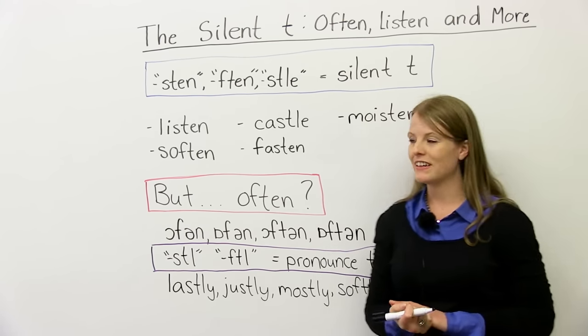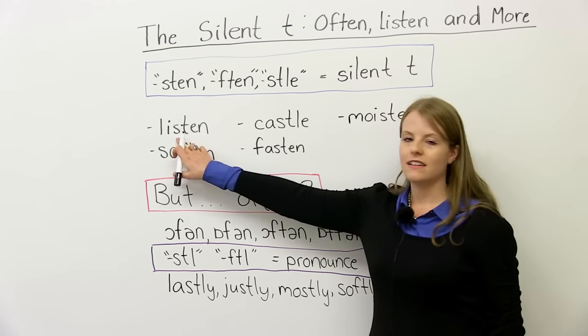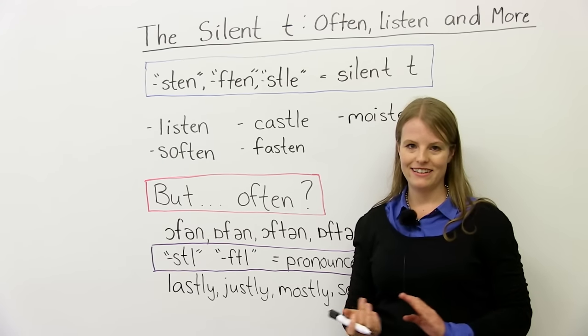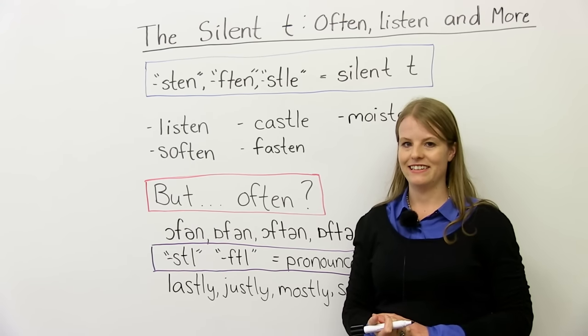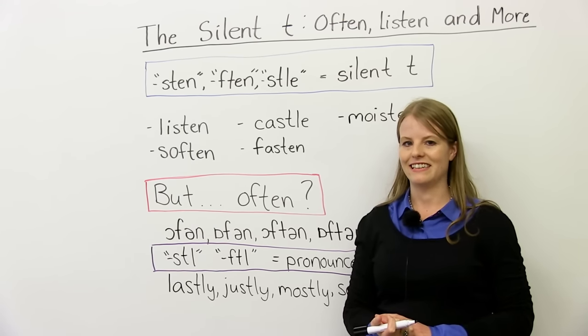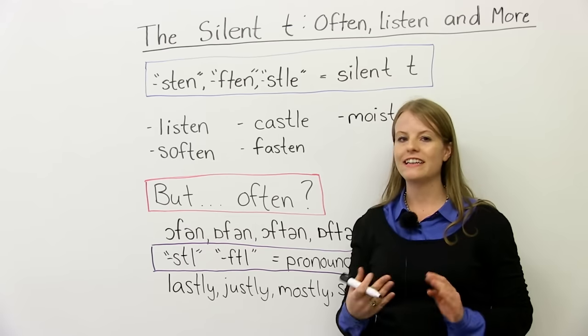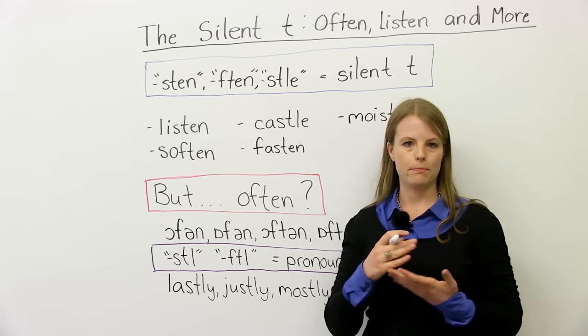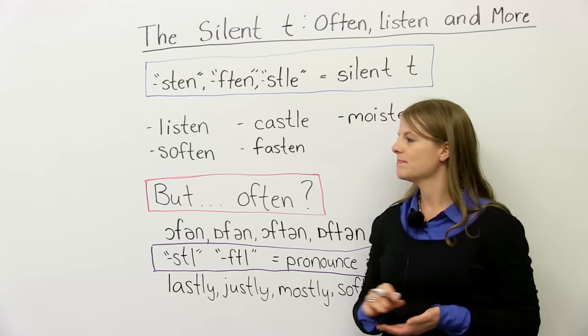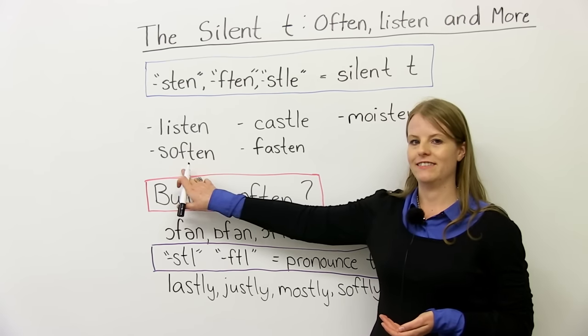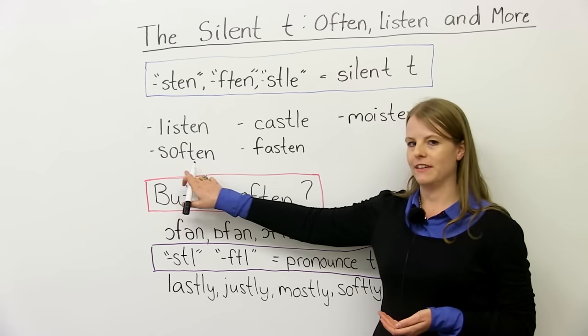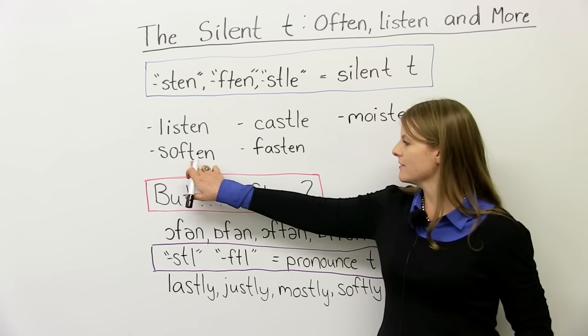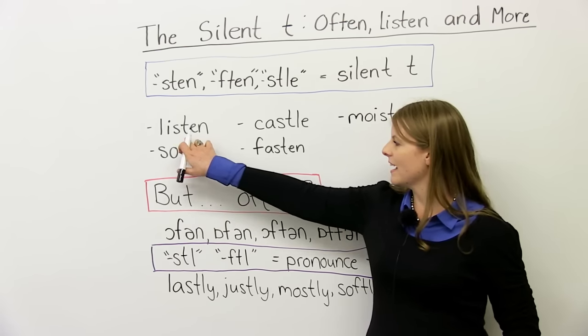So what are some examples of this? This, how do we say it? Listen. Listen. So you cannot hear a T. I do not hear a T. I do not say listen. I say it with an S, but no T. Listen. Soften, soften, soften. And again, you see F-T-E-N, S-T-E-N.